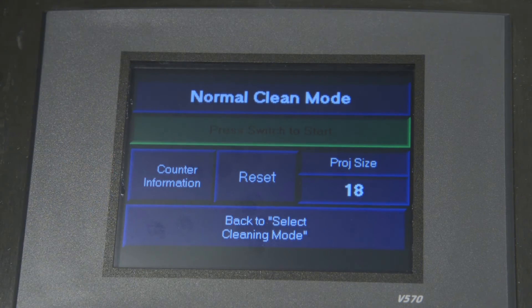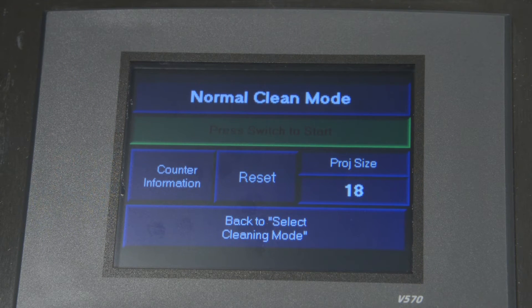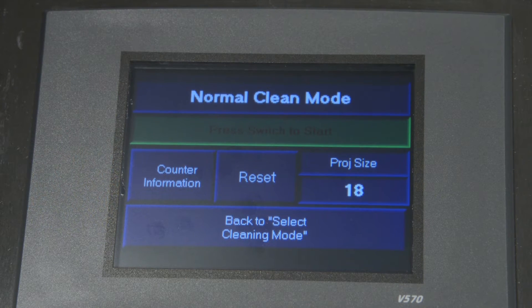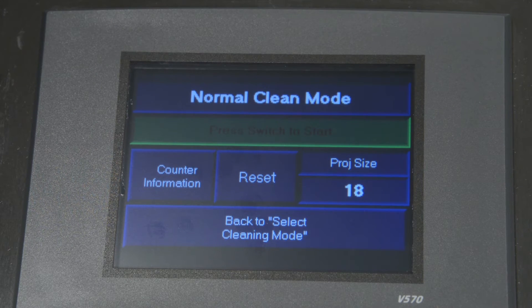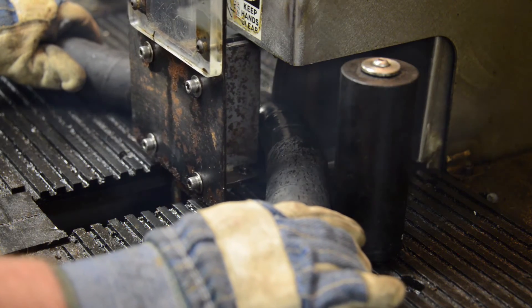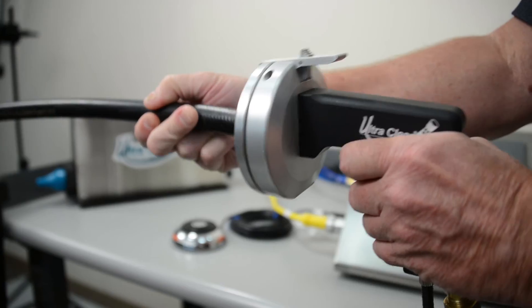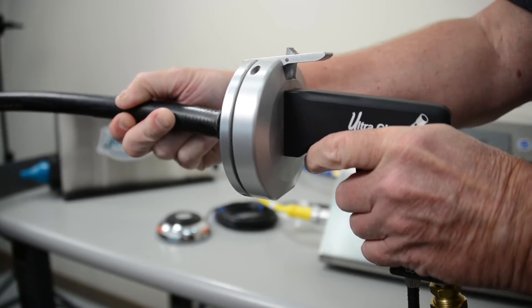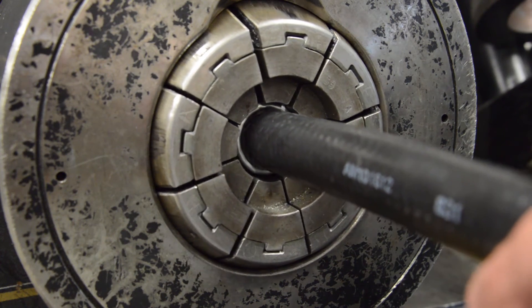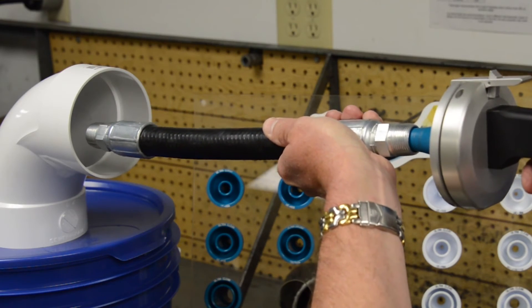The most popular cleaning mode is the Normal Clean mode when following the UltraClean recommended cleaning procedure. The Normal Cleaning procedure is to fire one projectile each way through the hose after the cutting process and a third and final projectile through the assembly after the crimping process.